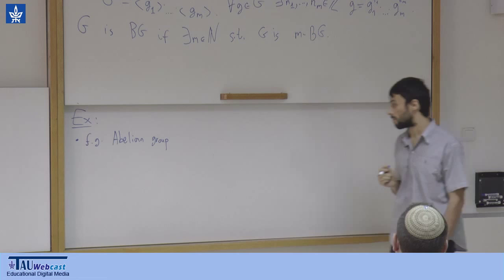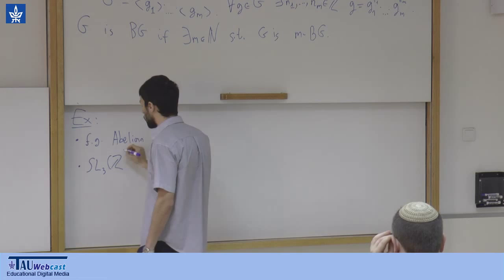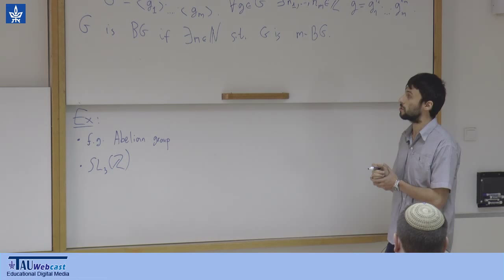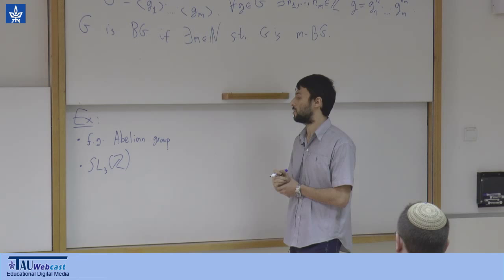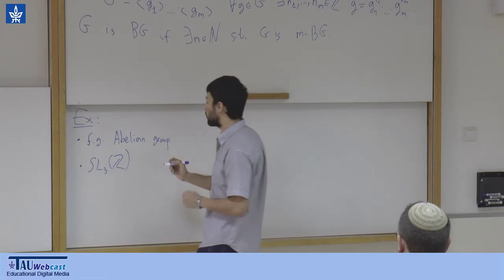The second example, which is a bit non-trivial, is SL3(Z) — the group of 3×3 matrices with integer coefficients and determinant one. To see that this group is boundedly generated is not so easy. That it is finitely generated is not so difficult and is basically equivalent to Gaussian elimination. But to see it is boundedly generated requires some number theory; one proof uses Dirichlet's theorem that every arithmetic progression contains infinitely many primes.